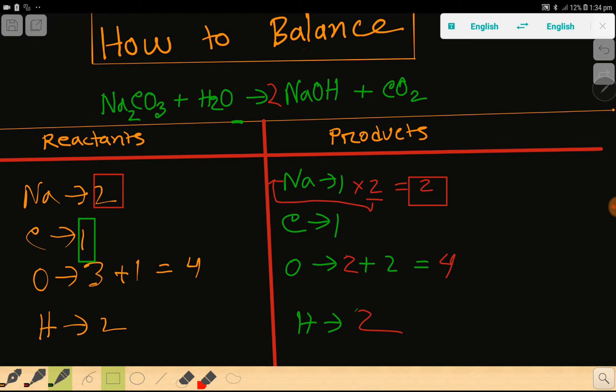We have one carbon here, we have one carbon here. Then we have four oxygen here, we have four oxygen here. Then we have two hydrogen, two hydrogen. So look, everything is balanced. You can say that this